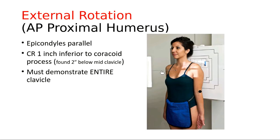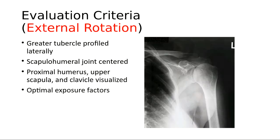For the external rotation, you must demonstrate the entire clavicle — both the acromial end and the sternal end. In the example image, it appears the sternal end is being clipped, which is not acceptable. Even in the book images, the sternal end of the clavicle appears clipped, which is not acceptable. The collimation needs to be opened slightly from side to side to capture that, and we collimate to a 10 by 12 crosswise.